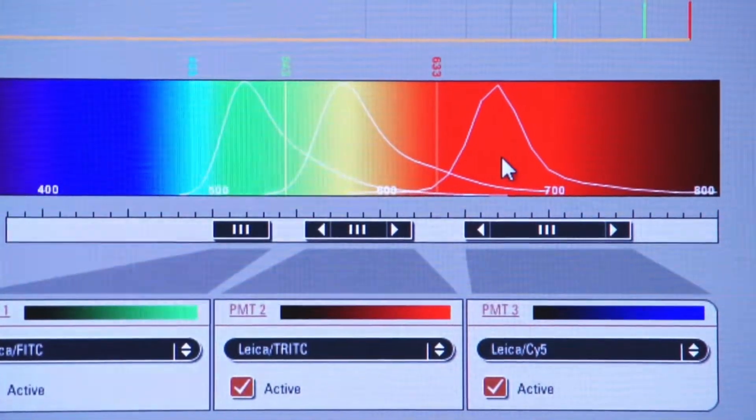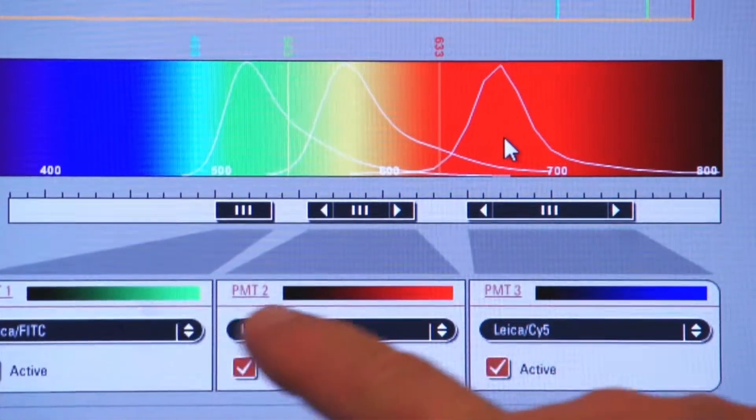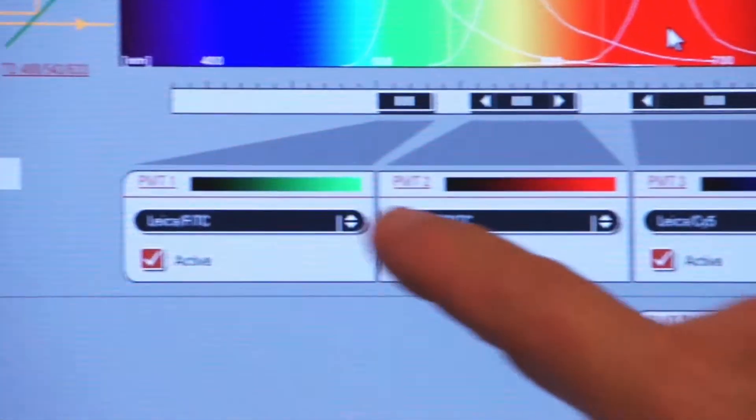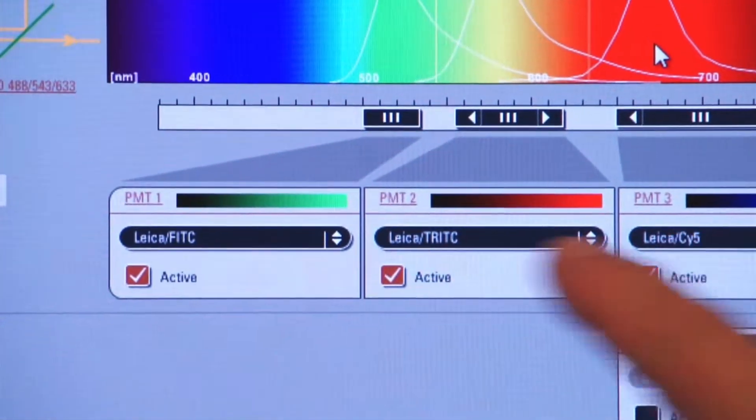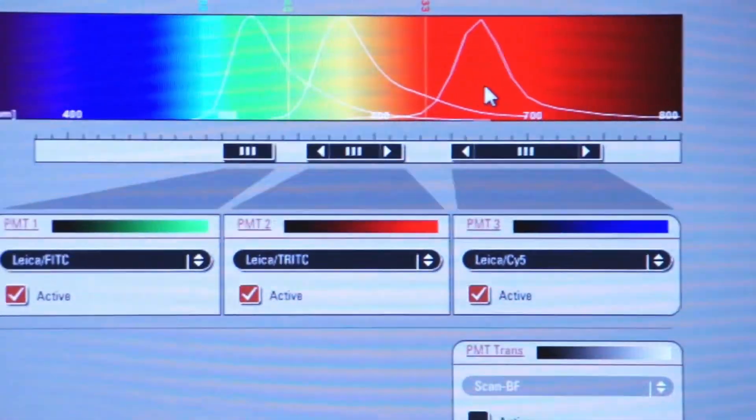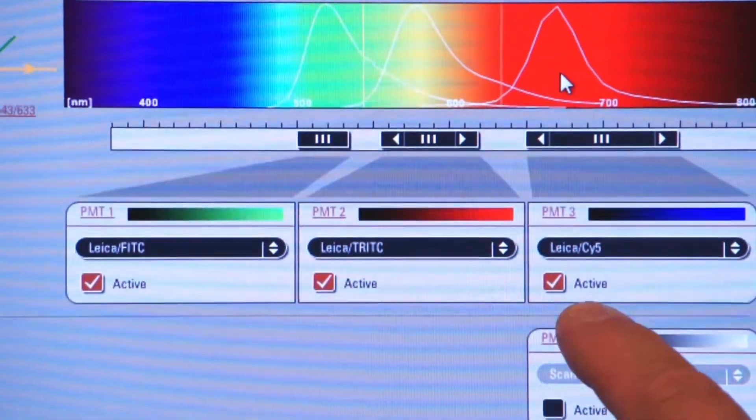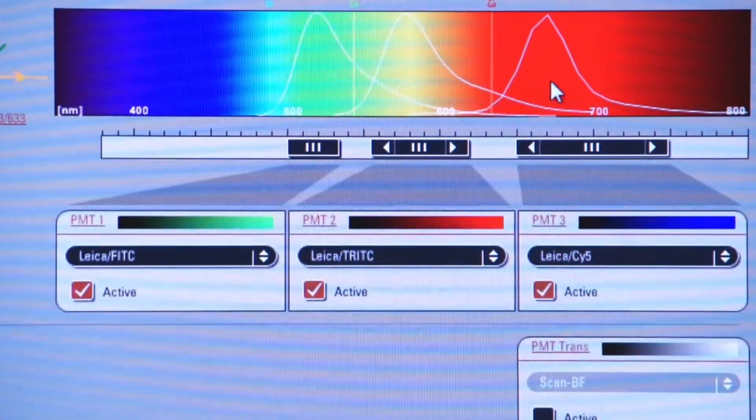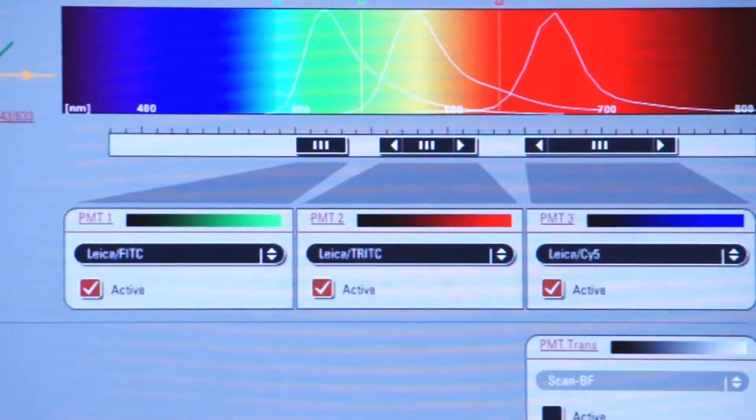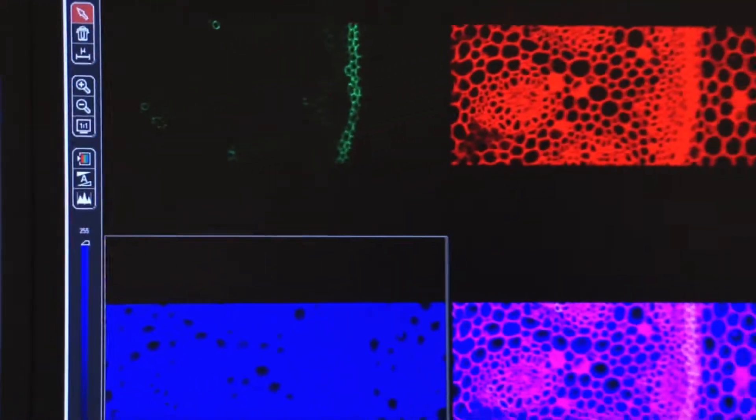We're going to be outputting our image in three colors: green, red, and blue. But we can also modify these colors as you'll see in a second. Also, please note that all three photomultiplier tubes are now activated. I'm going to click on Live, and if you look on the right screen, you'll now see an image with four windows in it.